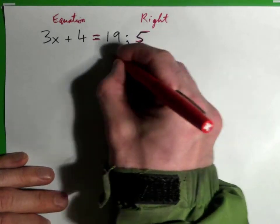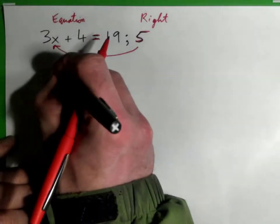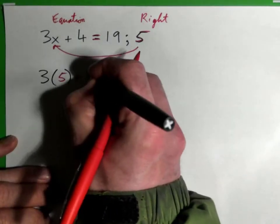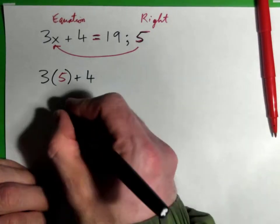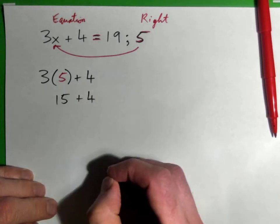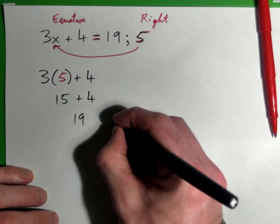What I want you to do is take that 5 and stick it in here and see what happens. So you just go 3 parentheses 5 plus 4 and see what you get. That's just 15 plus 4, which equals 19, and yes indeed that works.